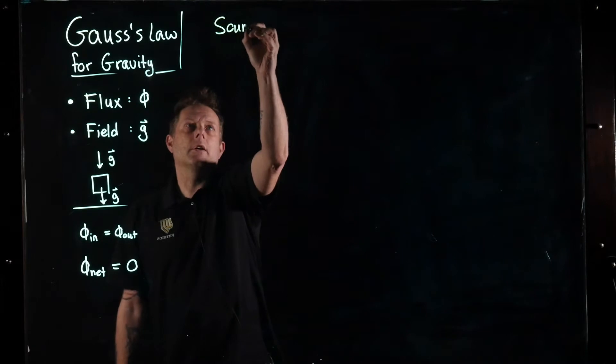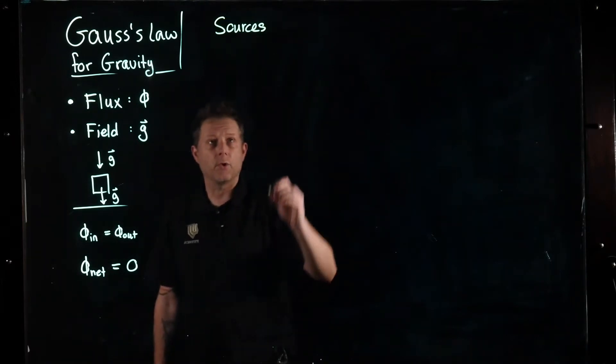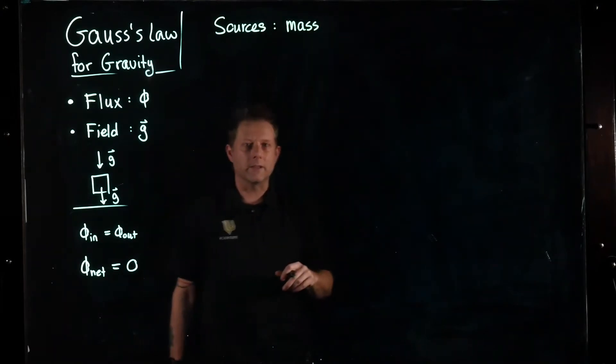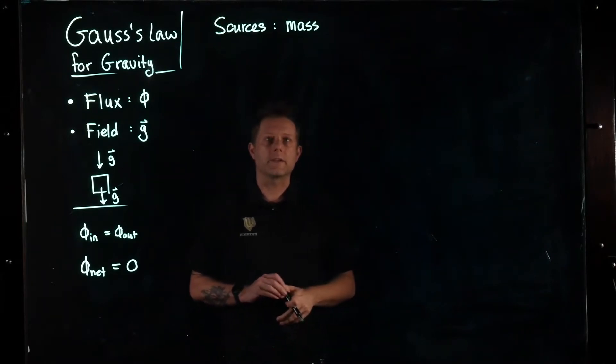In this video we're going to consider what happens when we include a source. The source of gravitational field is mass, at least in classical field theory of what we call Newtonian physics.